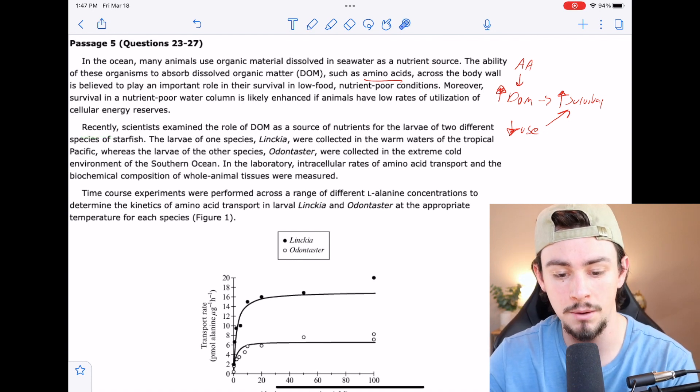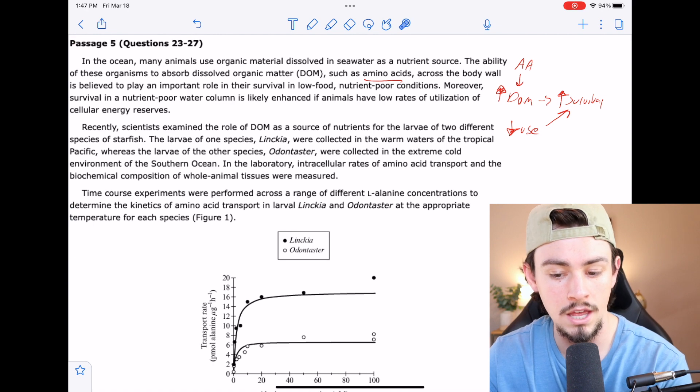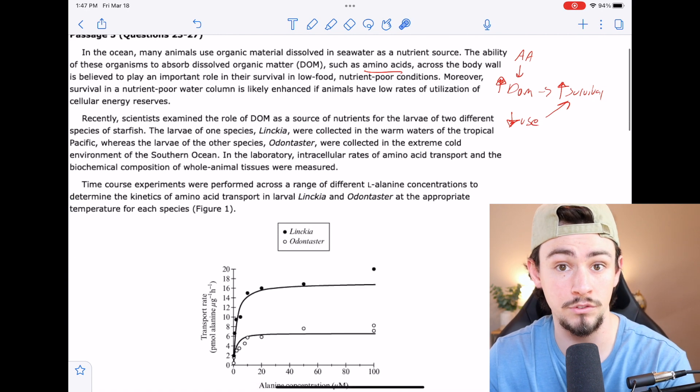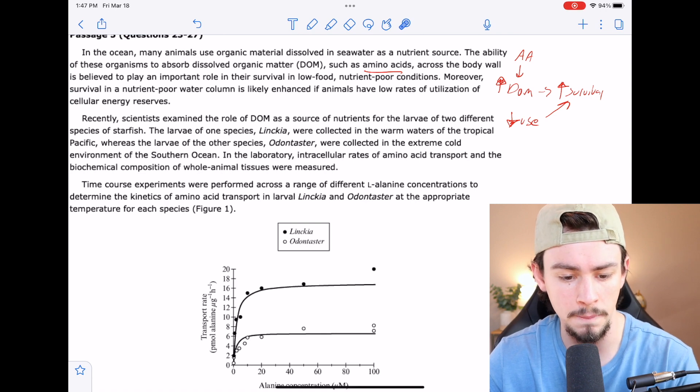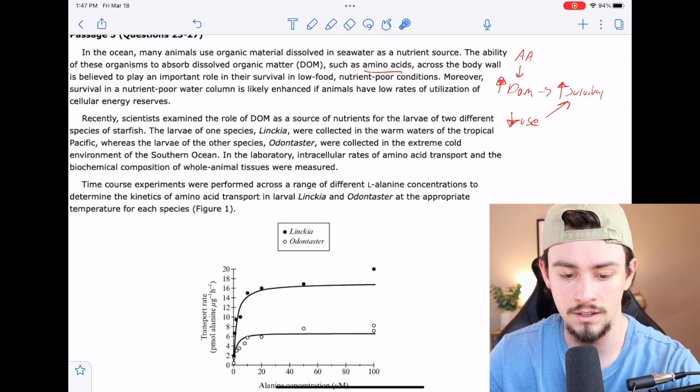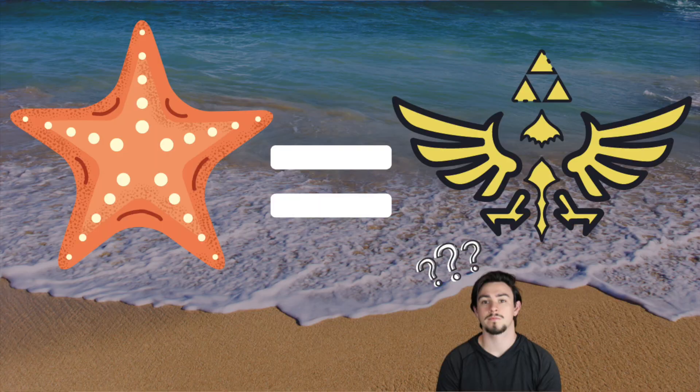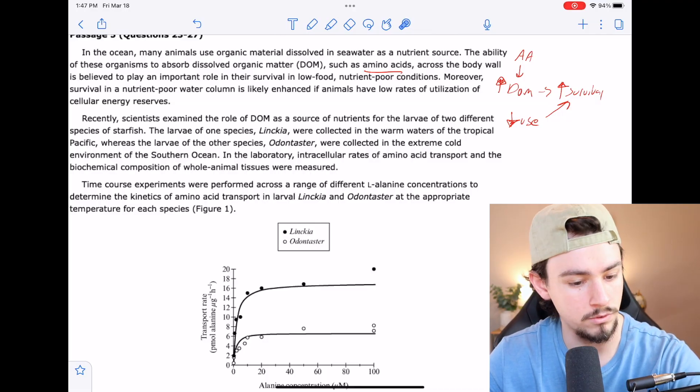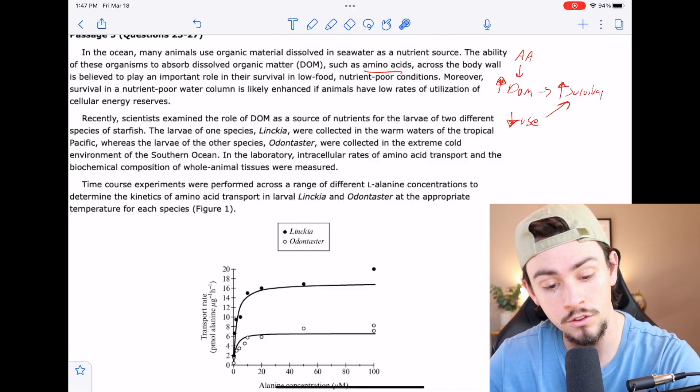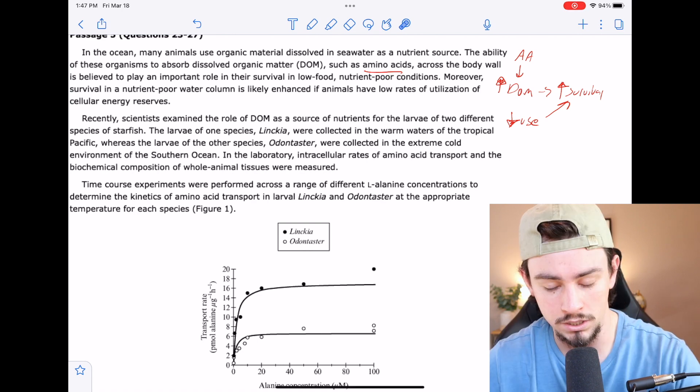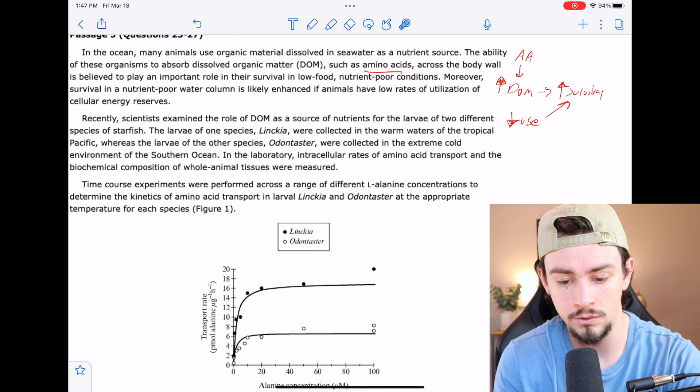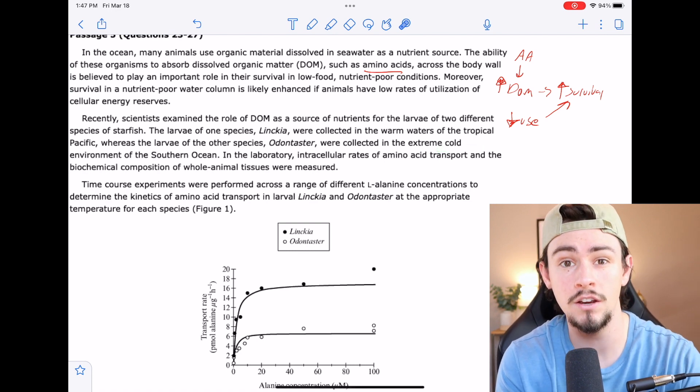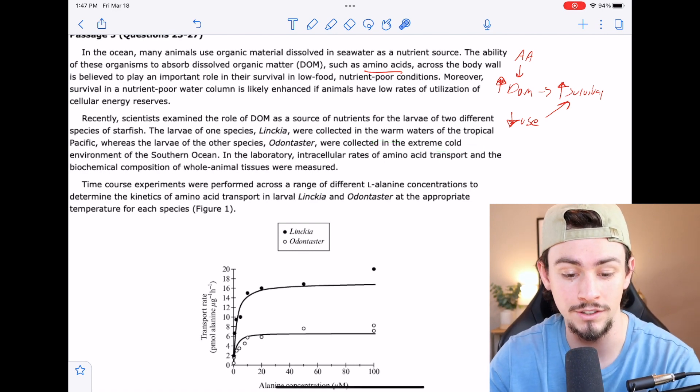We go on to read, recently scientists examined the role of DOM as a source of nutrients for the larva of two different species of starfish. I didn't know that a baby starfish was named a larva, but that's okay. The larva of one species, Linka and Zelda, were collected in the waters of the warm tropical Pacific, whereas the larva of other species, Odontaster, were collected in the extreme cold environment of the southern ocean. So it seems like what they're differing here is the temperature of the water that they were actually collected in.